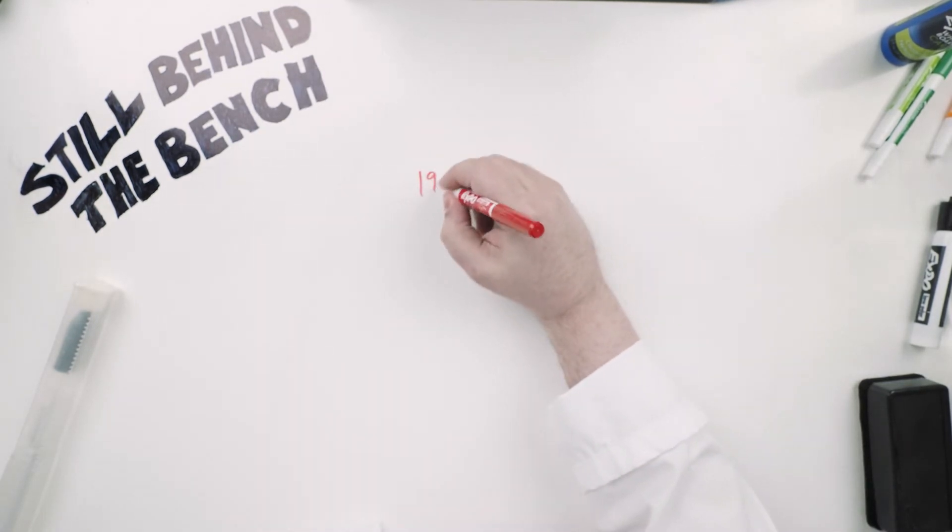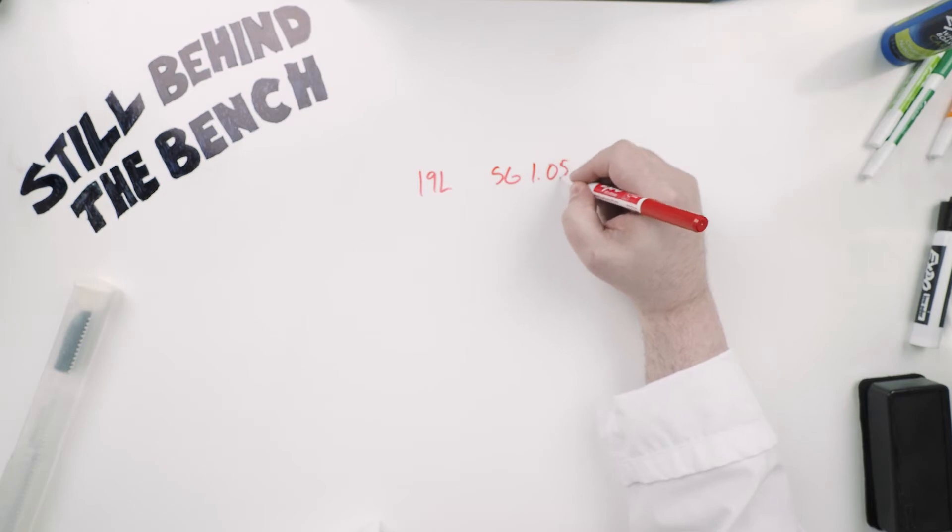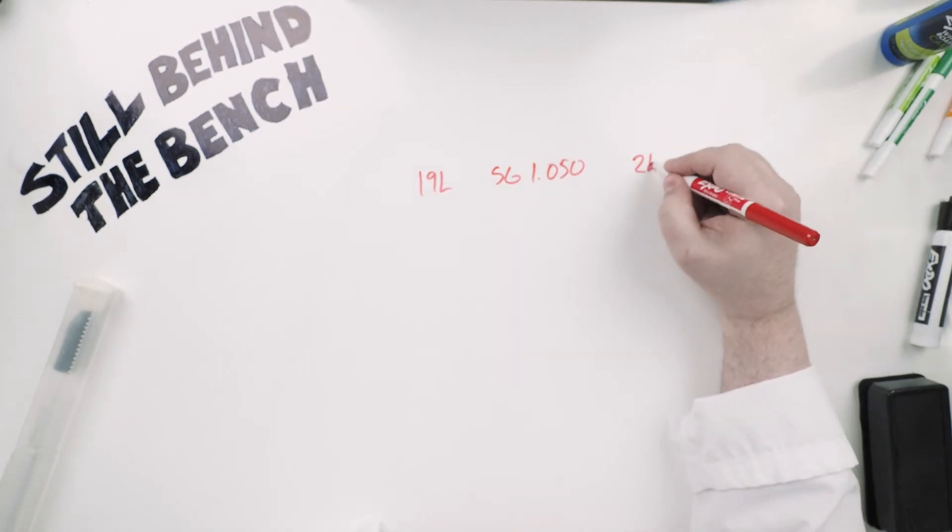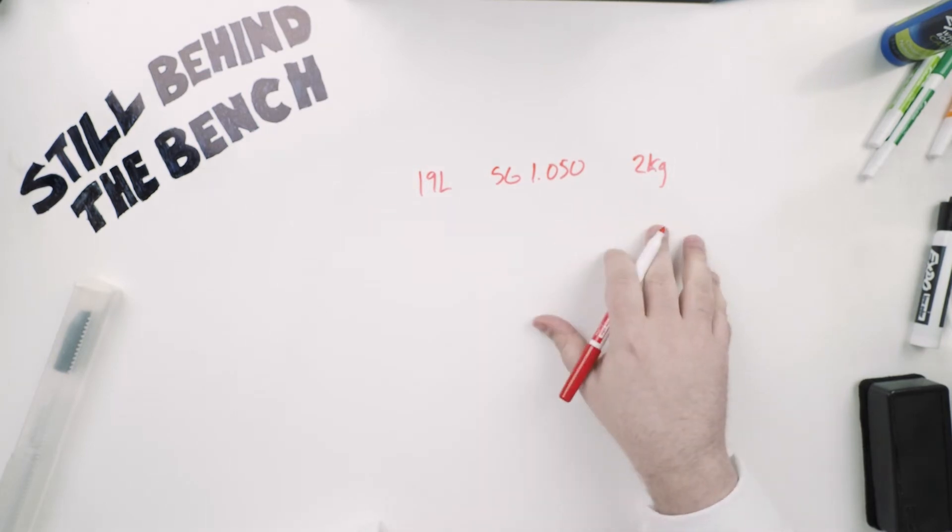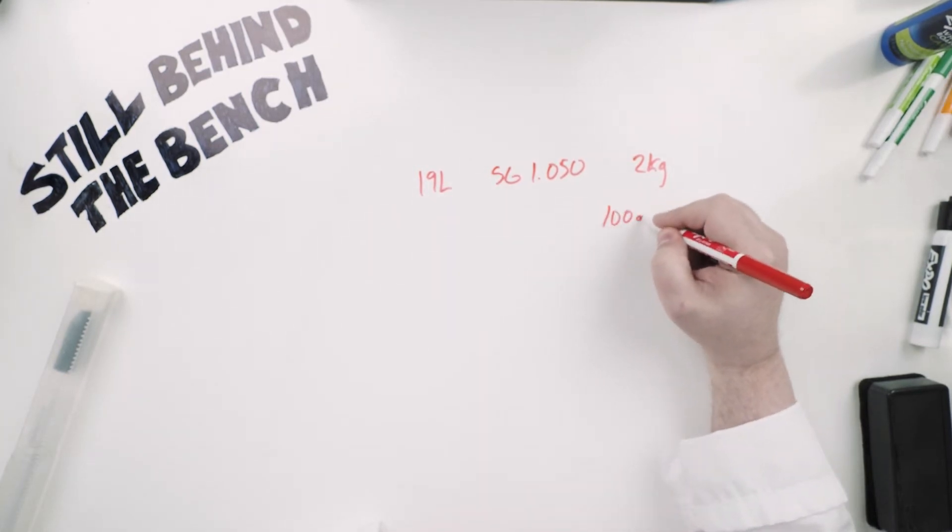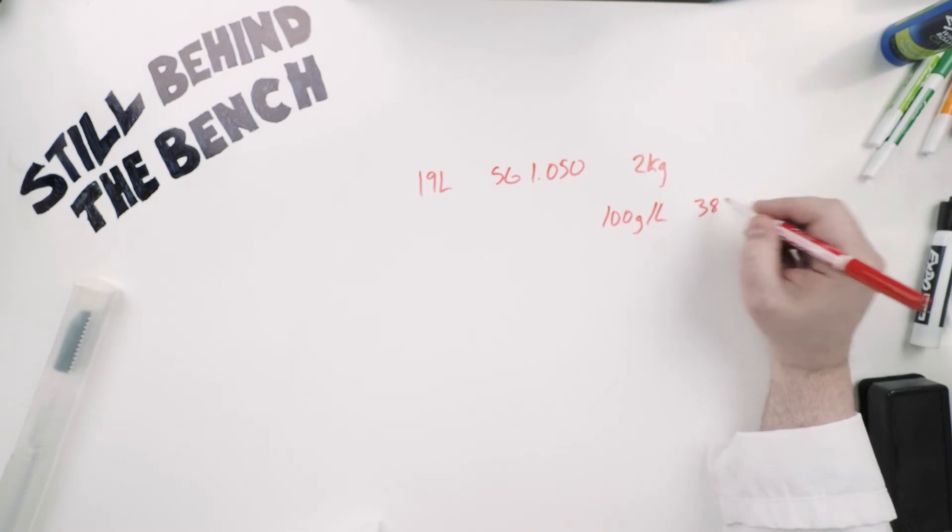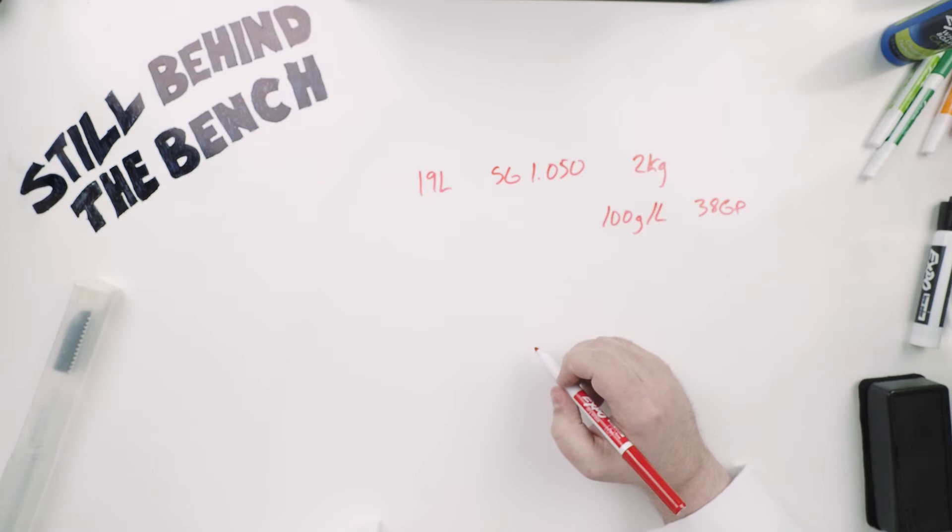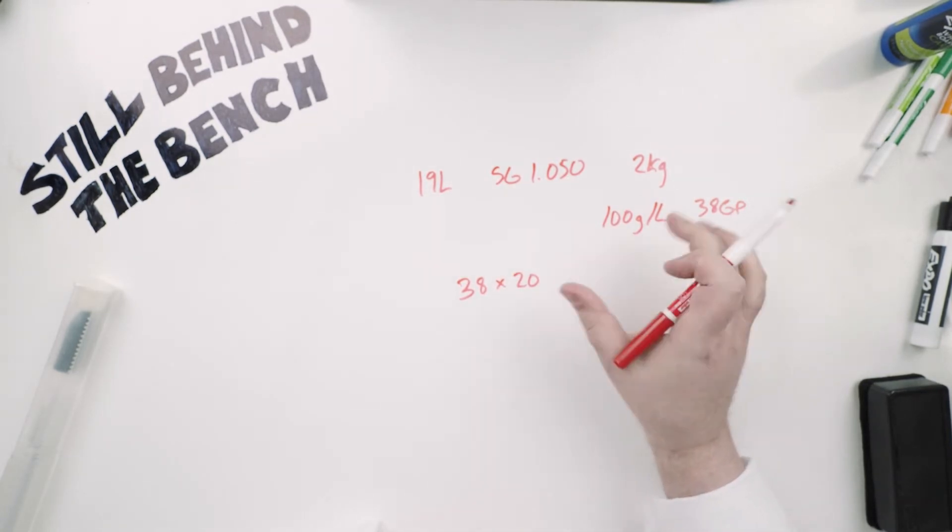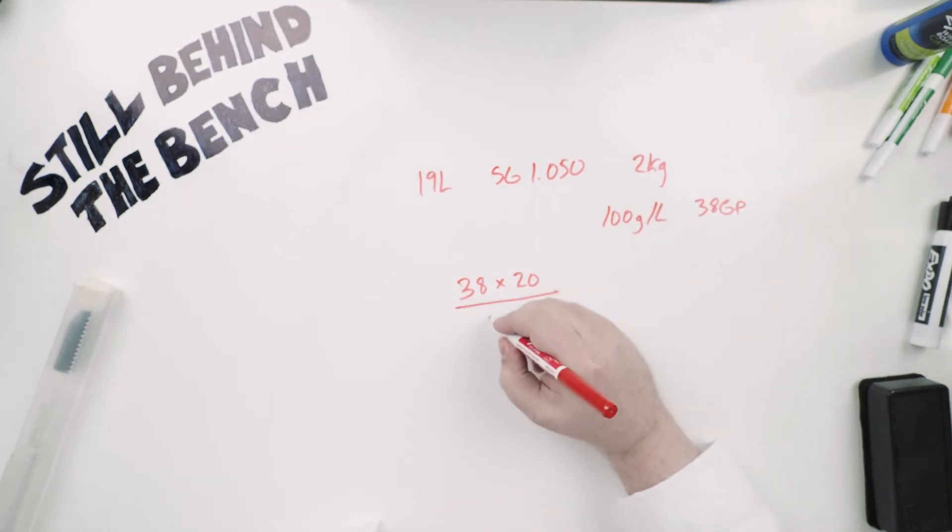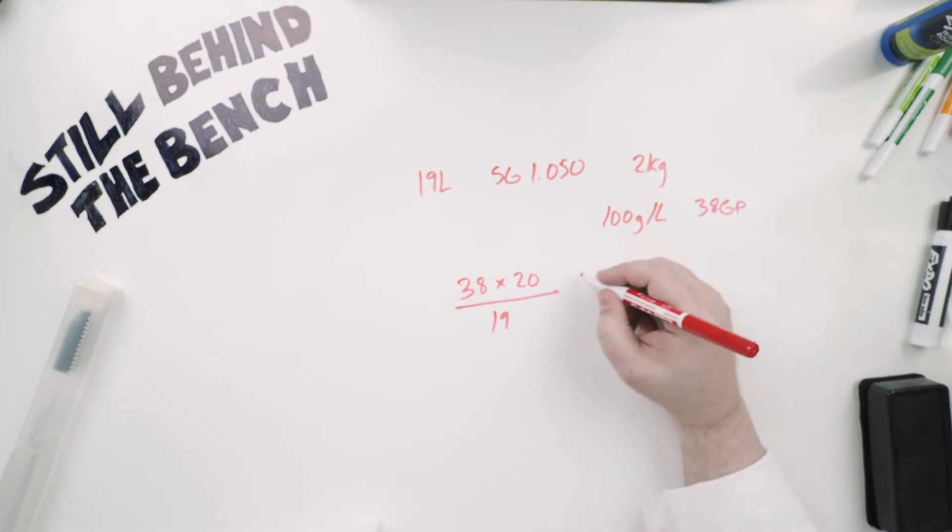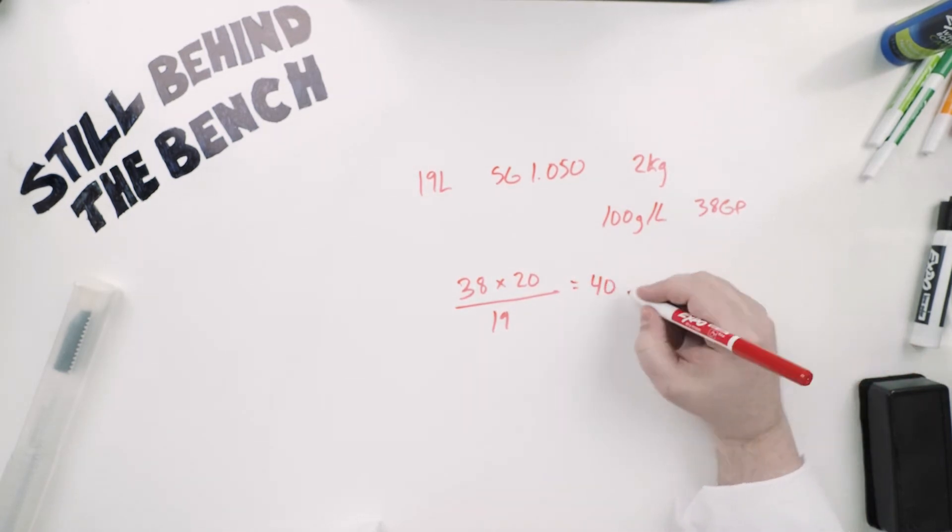Say you have 19 liters of wash with a current specific gravity of 1.050 and you want to add two kilograms of sugar to it. Well you can think of it like this. For every 100 grams per liter of sugar you have roughly 38 gravity points. So you can do some simple math. 38 times 20 because there are 2100 gram units in two kilograms divided by 19 liters and that gives you 40 gravity points.